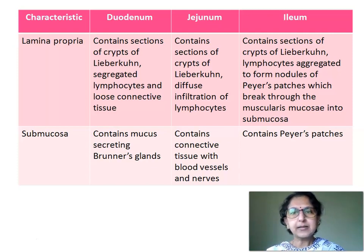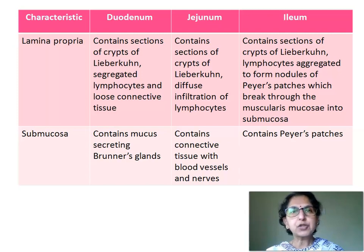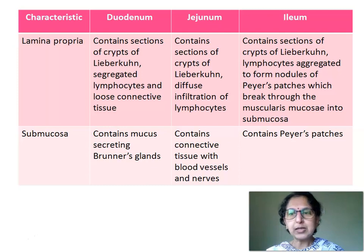Thus we have studied the three slides of the small intestine — duodenum, jejunum, and ileum — and we also saw how to differentiate between them. The most important characteristic feature of duodenum is Brunner's glands seen in the submucosa. The characteristic feature of ileum is Peyer's patches, which are seen in the lower part of the mucosa and may pass through the muscularis mucosae and also be seen in the submucosa.